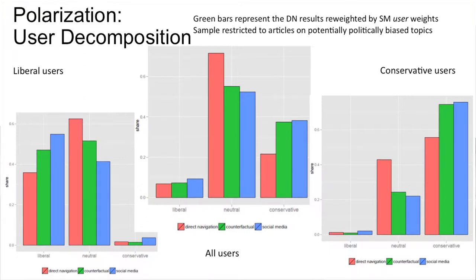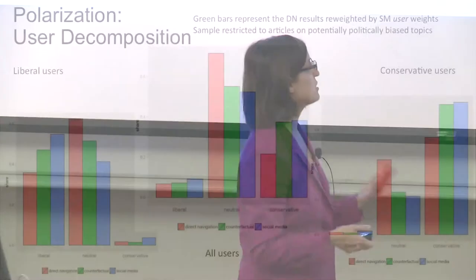Now we do the same exercise but only look at conservative users — those whose average article score is negative on a scale of minus one for liberal, zero for neutral, one for conservative. These are kind of noisy measures — we've crowdsourced a lot of articles but it's still pretty noisy, and most people don't have a lot of articles coded as politically polarized. But among conservative users, they are reading almost no liberal news. They are reading much more polarized news on social media, but the user decomposition closes a lot of the gap between direct navigation and social media for conservative users.